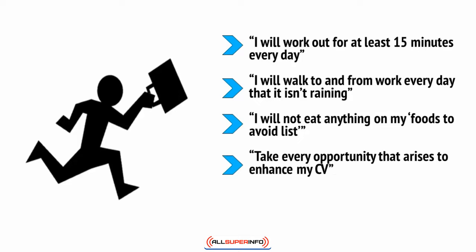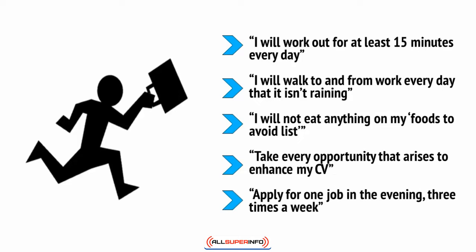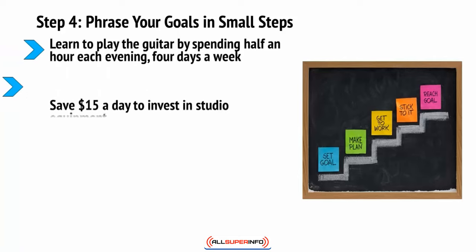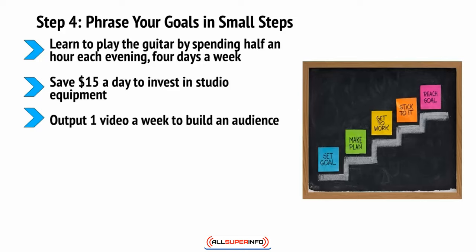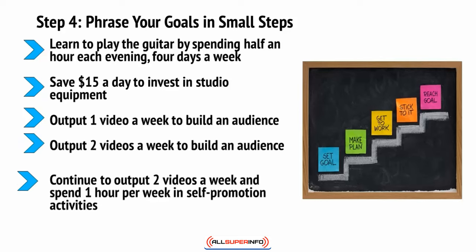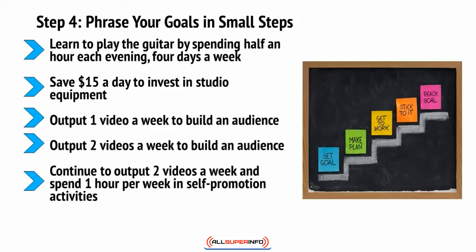Likewise, if you want to advance your career, your goal might be to take every opportunity that arises to enhance your CV, or apply for one job in the evening three times a week. Some broader goals are going to take multiple steps. For instance, if your goal is to become a famous musician, you might take these steps: learn to play guitar by spending half an hour each evening four days a week; save fifteen dollars a day to invest in studio equipment; output one video a week to build an audience, then two videos a week, plus one hour per week in self-promotion activities.